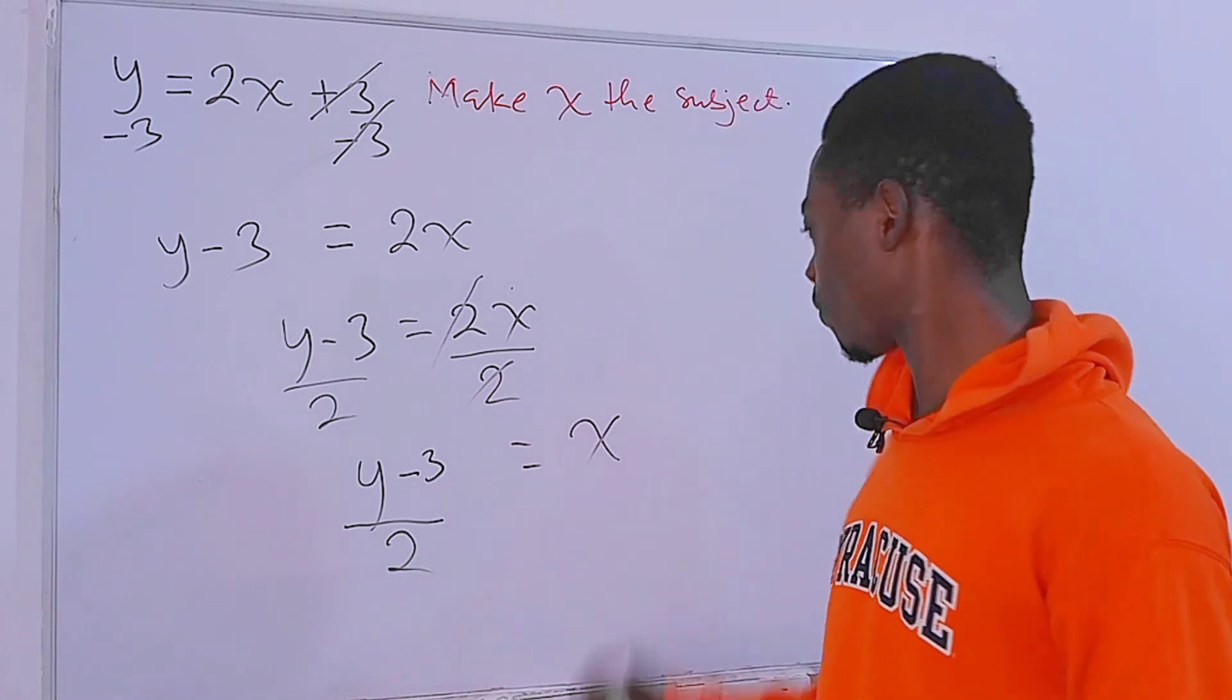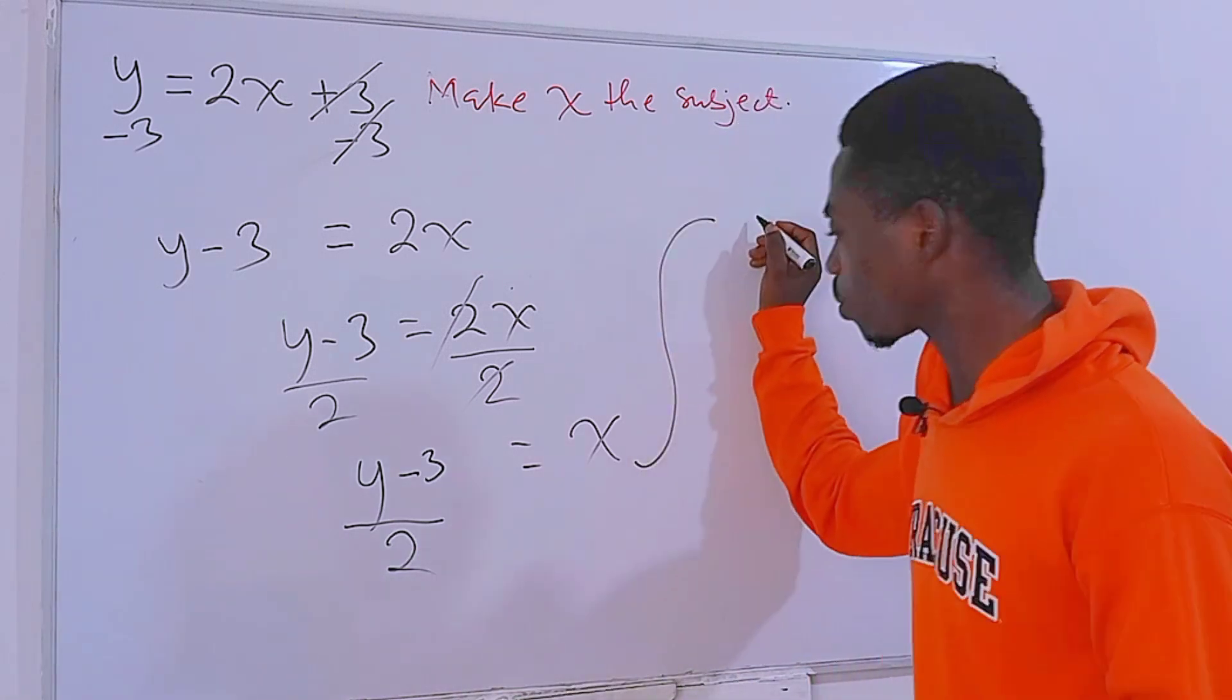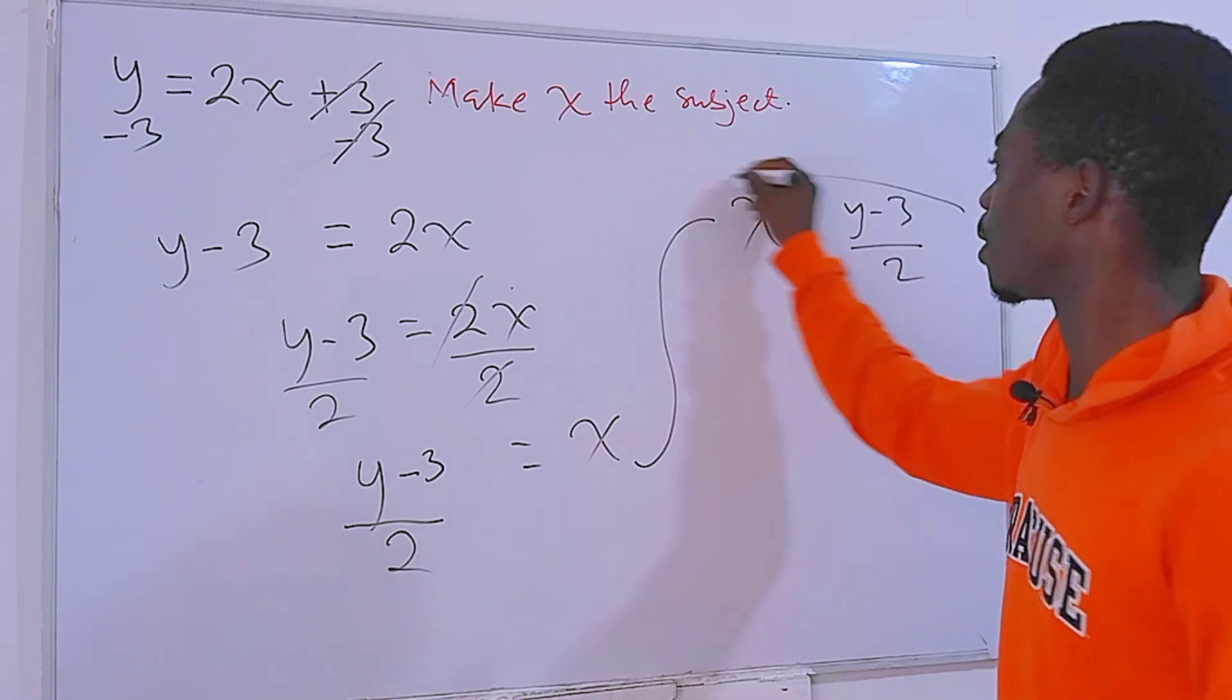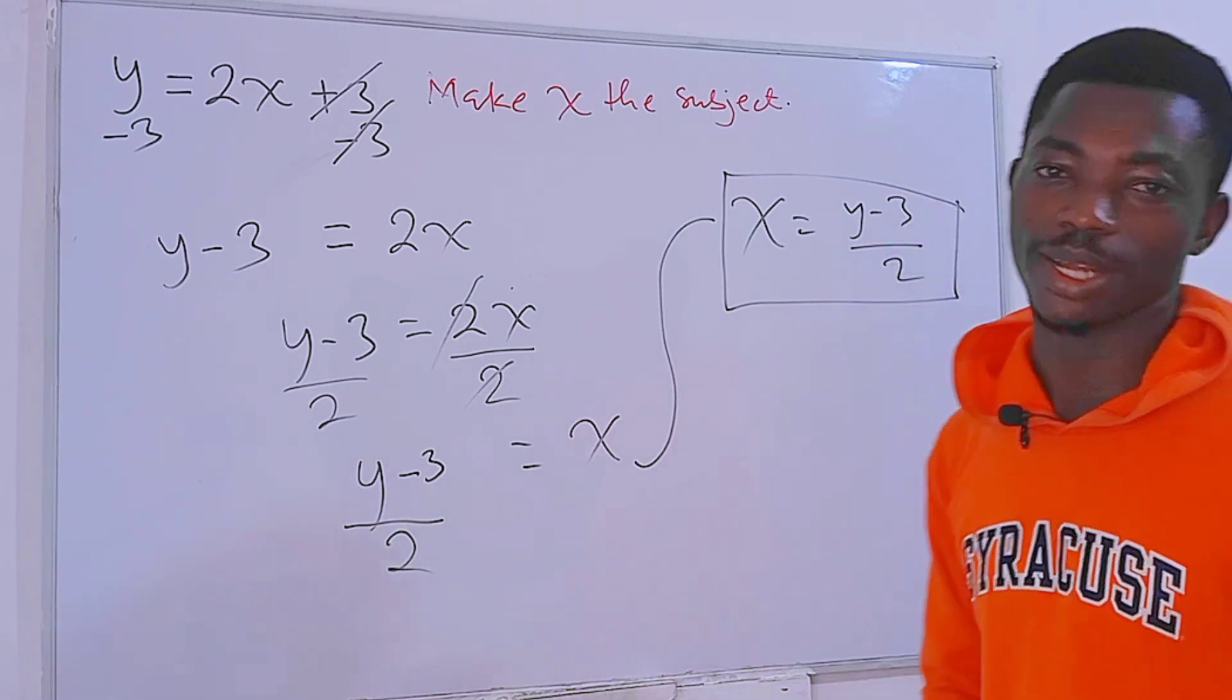And that is it. If you don't like it this way, you can also say x is equal to y minus 3 divided by 2. And that is pretty much it.